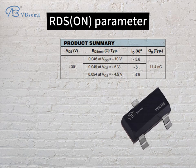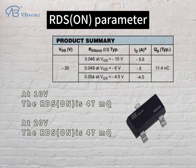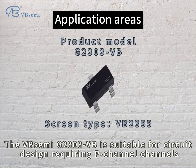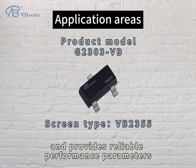RDS(on) parameter: at 10V, the RDS(on) is 47mΩ; at 20V, the RDS(on) is 47mΩ. The VB Semi G2303VB is suitable for circuit design requiring P-channel and provides reliable performance parameters.